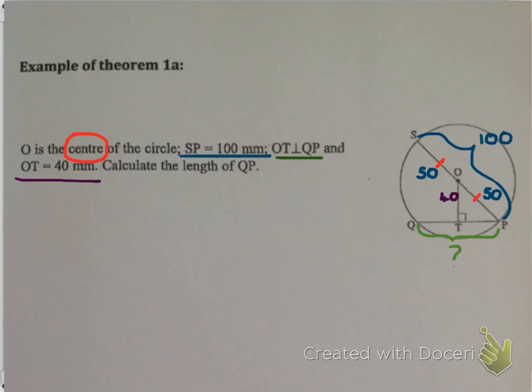I like to come up with a plan before I even start answering a question. In this case, I can immediately see that I can find TP using Pythagoras. But how does that help me find QP? Well, we just learned a theorem that says if you have a line from the center and it's perpendicular to the chord, it cuts the chord in half. Which means I think I have a plan for my question.